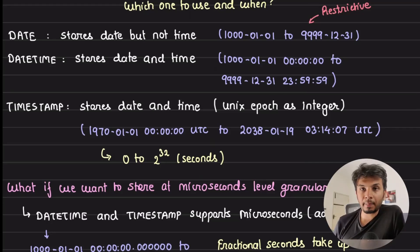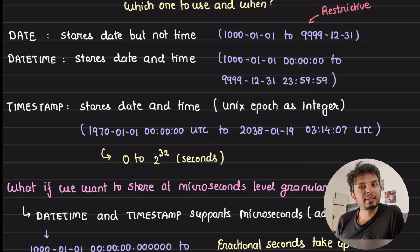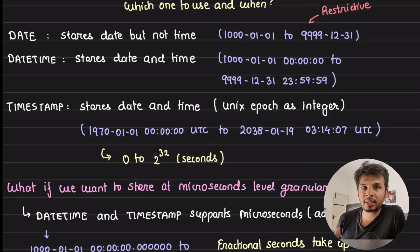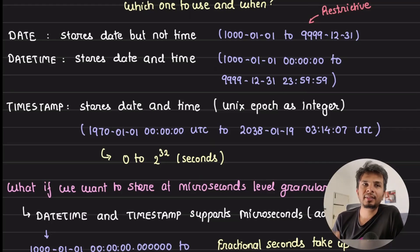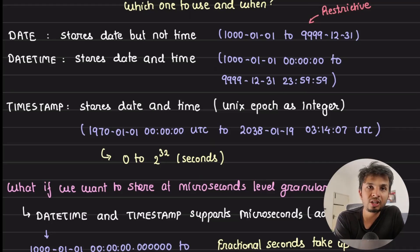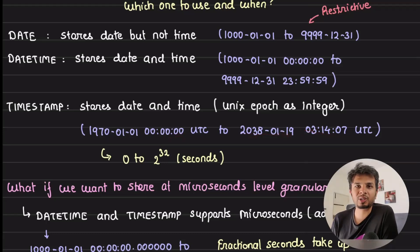Because we're storing the number of seconds elapsed since 1st January 1970 as an integer, there's a limit. Integers are 32 bits, so the maximum value is 2 raised to 32, which is roughly 4 billion. This means the date range that timestamp can cover is much smaller than datetime — from 1st January 1970 00:00:00 to 19th January 2038 at 03:14:07, essentially 2^32 seconds.